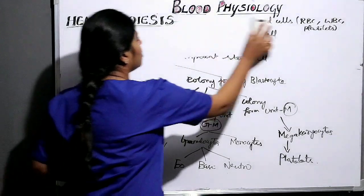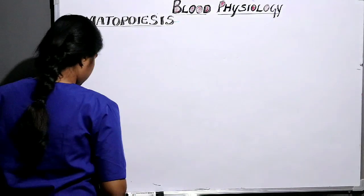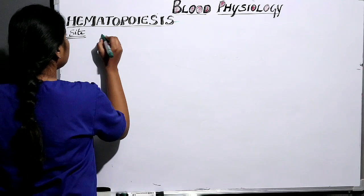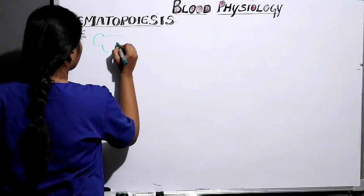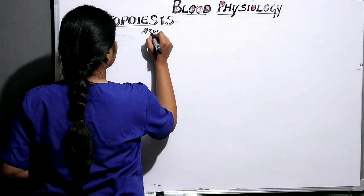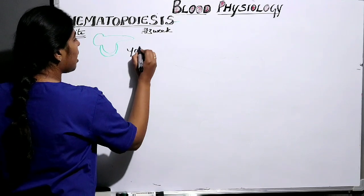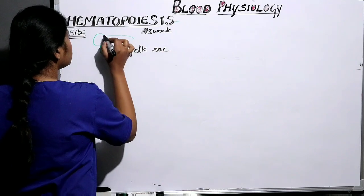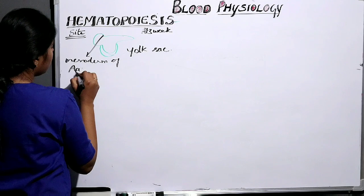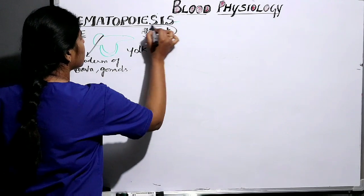Now let's discuss about the site of erythropoiesis. When the baby is in the embryo, at the third week, erythropoiesis starts at the yolk sac. It also starts in the mesoderm of the aorta and gonads.